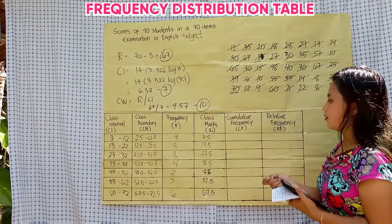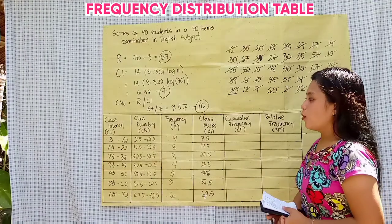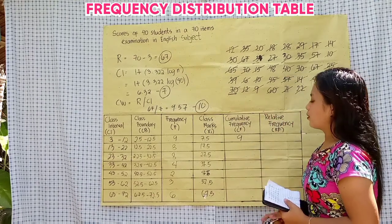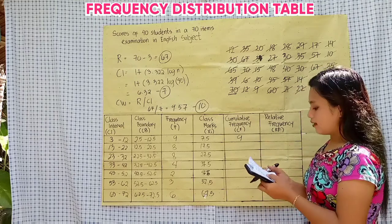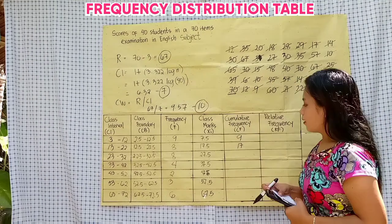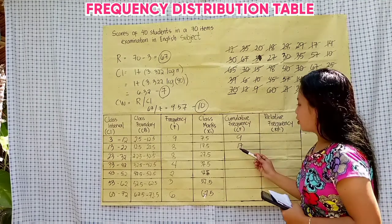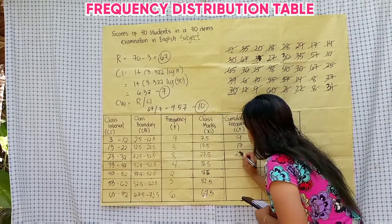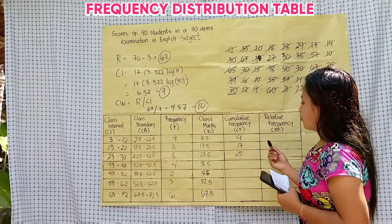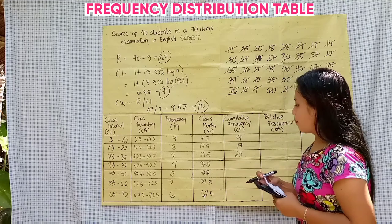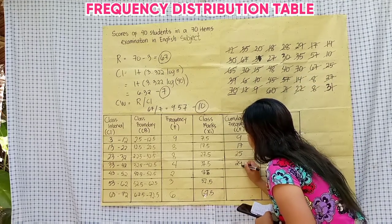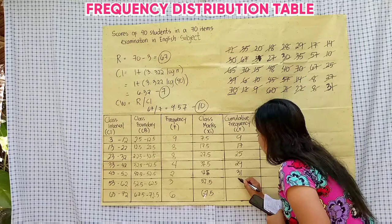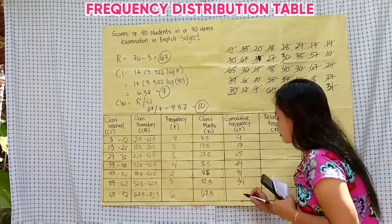Let's proceed to cumulative frequency. To find the cumulative frequency, we need to copy the first frequency, which is 9. Then add the cumulative frequency to the second frequency: 9 plus 8 equals 17. Then 17 plus 8 equals 25. Then 25 plus 4 equals 29. Then 29 plus 2 equals 31. Then 31 plus 3 equals 34. And last, 34 plus 6 equals 40.